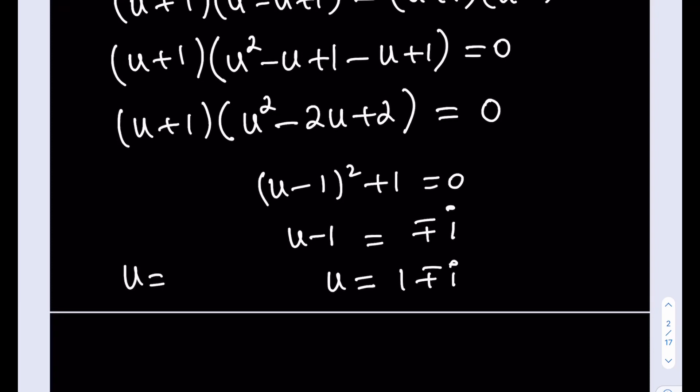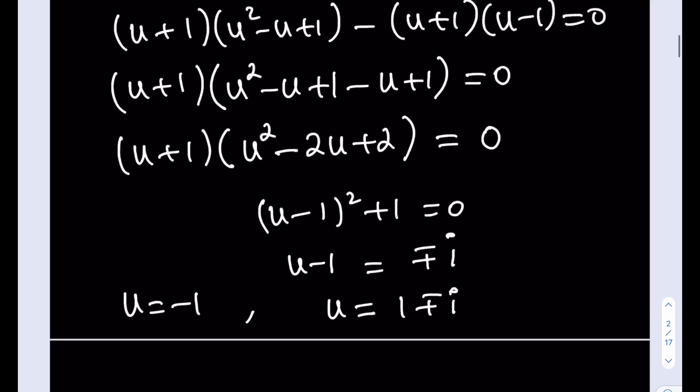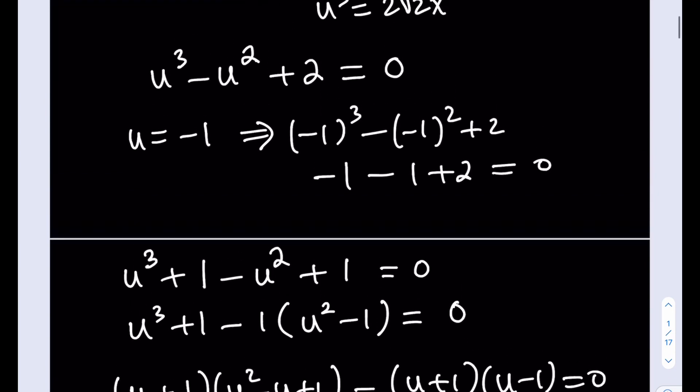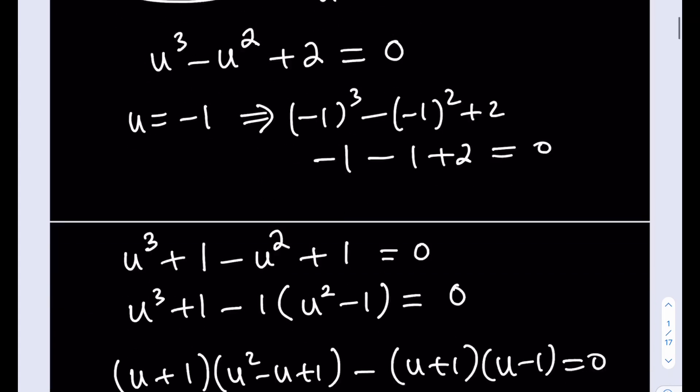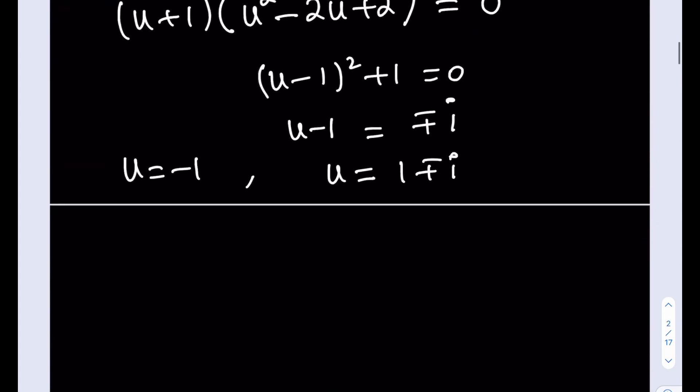But remember, u is not what we're looking for. We are looking for x. And what is the relationship between u and x? We did that at the beginning, and it was a very important transformation, or you may call that substitution. So u is equal to root 2x. u is equal to square root of 2 multiplied by x.